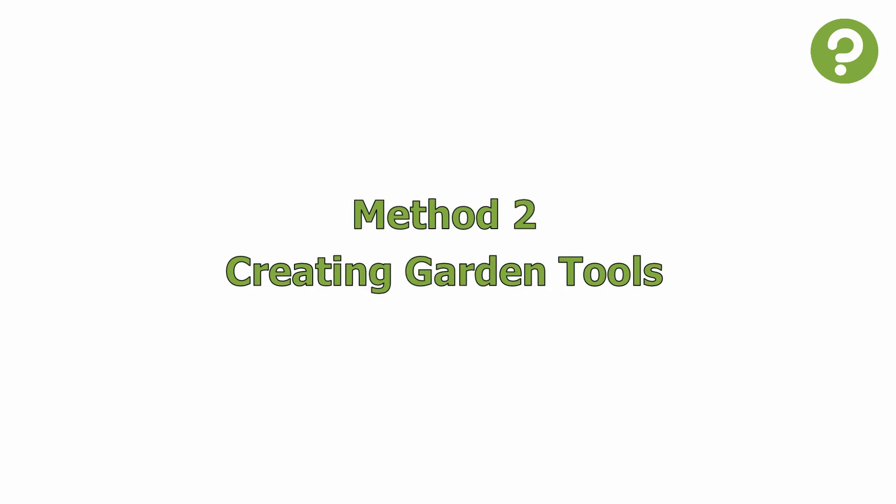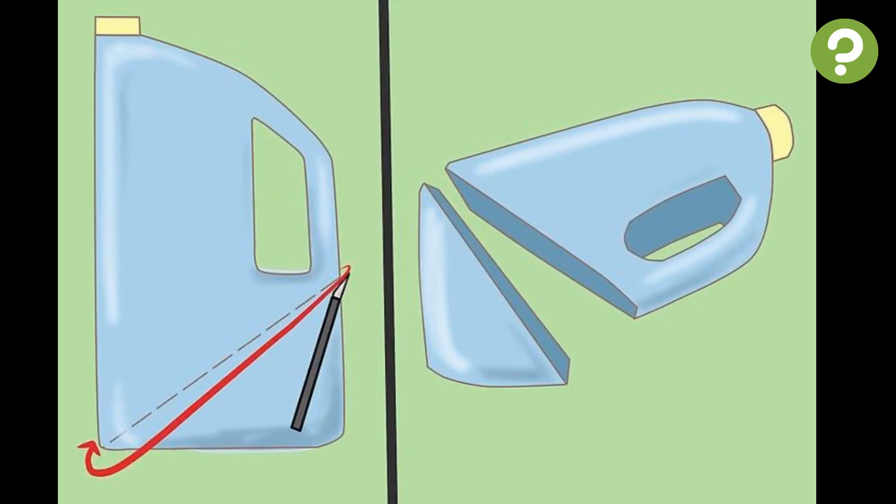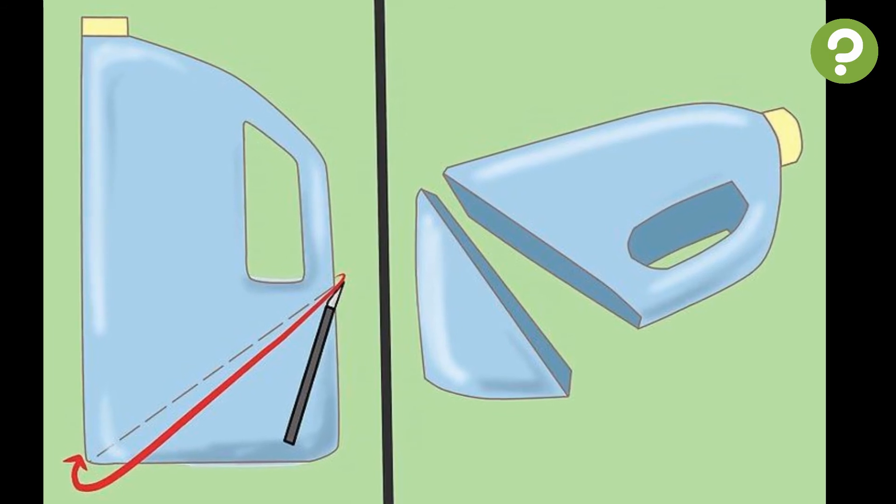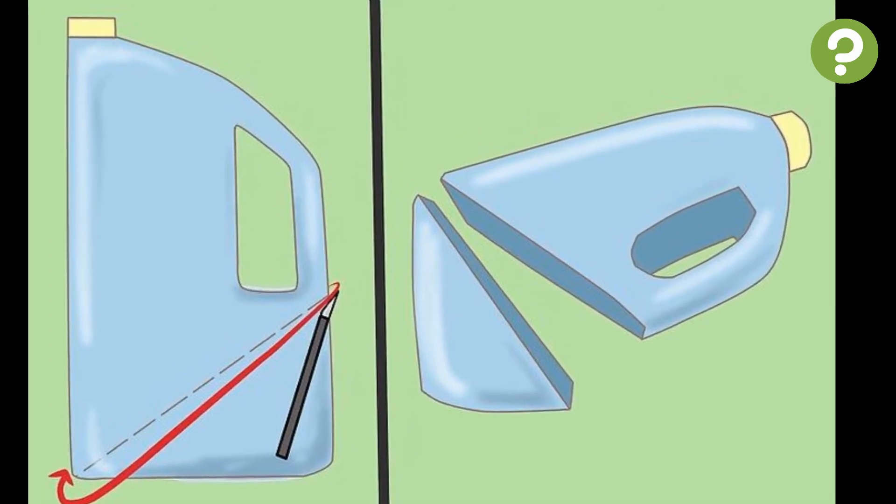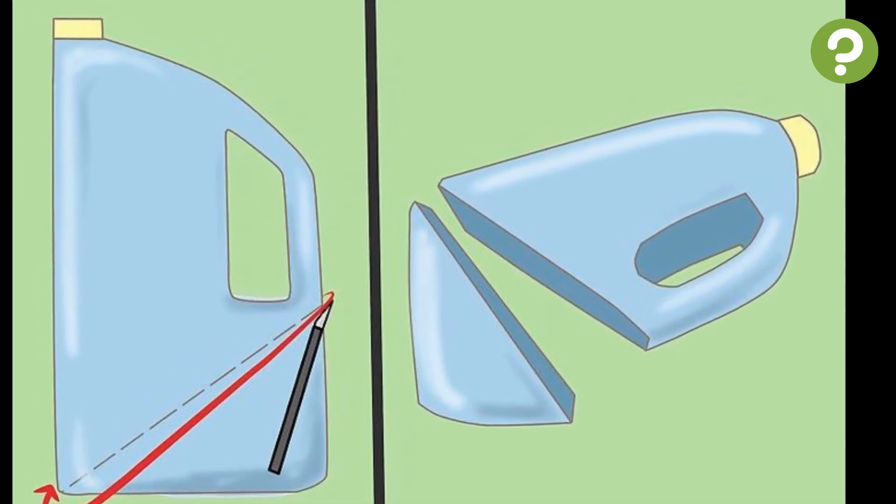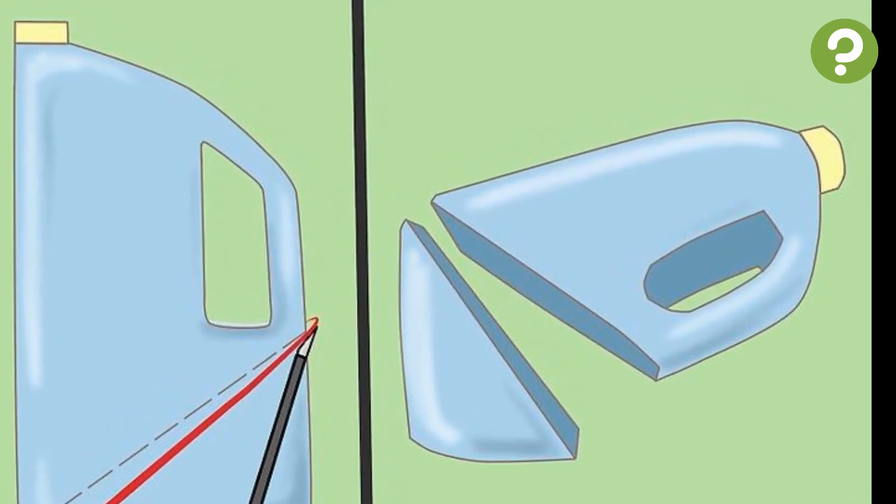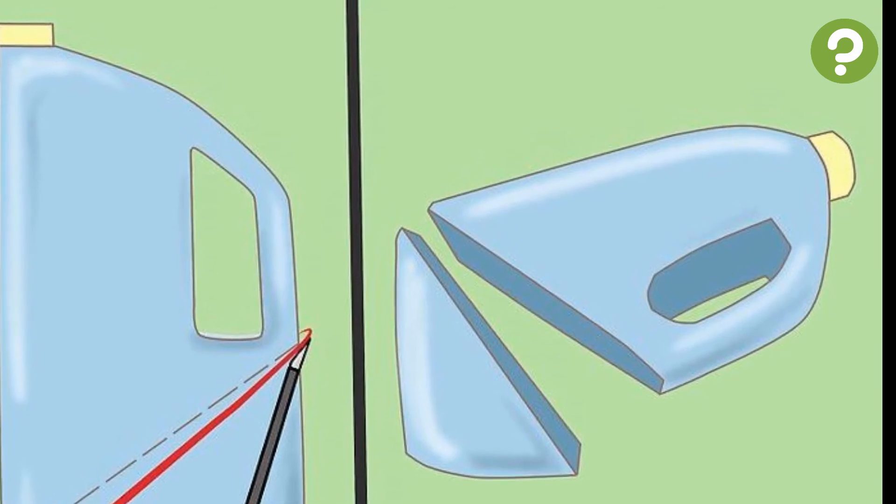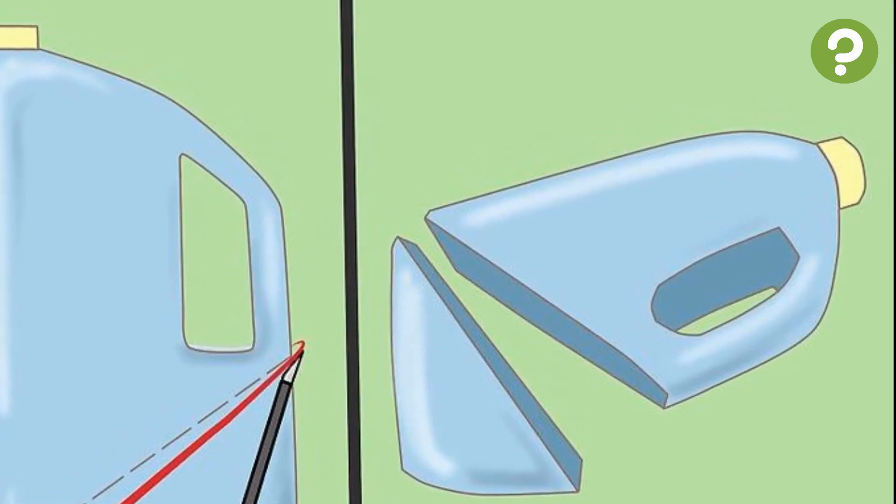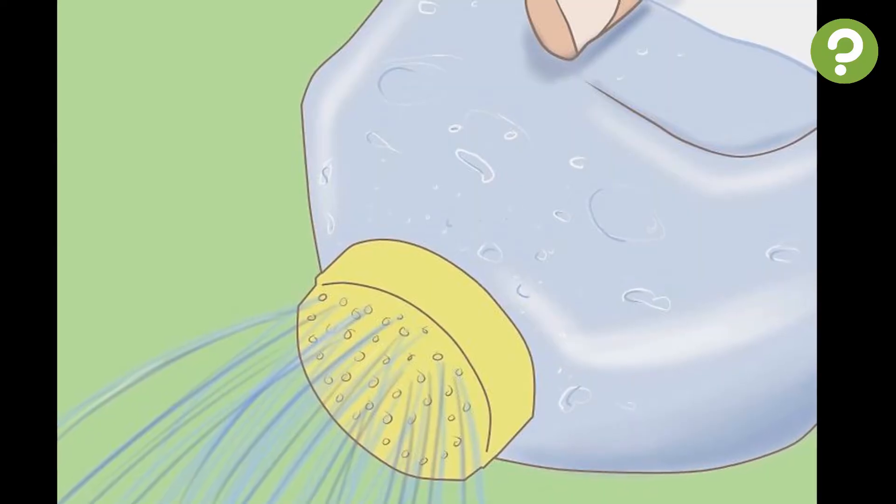Method 2 – Creating Garden Tools. 1 – Make a Garden Scoop. Use a craft knife to remove the bottom of the bottle. Then, on one side, cut an angled line up and stop right below the handle. Do the same on the other side. Cut across the top between the two cuts on the sides to remove the piece of plastic.